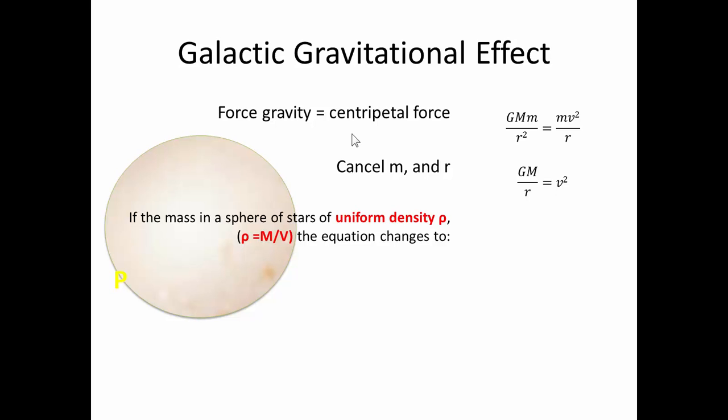Now it all depends on the mass of the stars on the inside of this sphere but let's consider the density. Let's say we have a uniform density ρ and this density is equal to mass divided by volume. This equation changes if you substitute for mass that Gρv divided by r is equal to v squared.